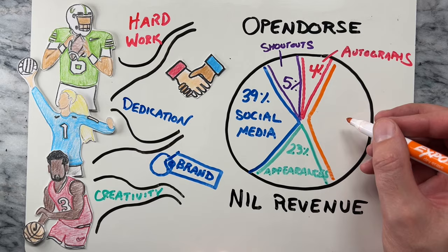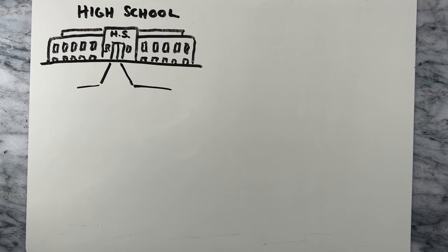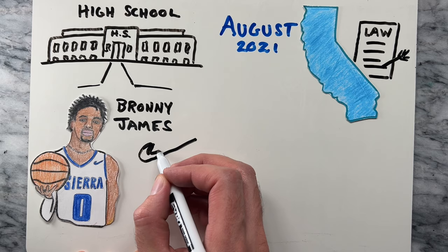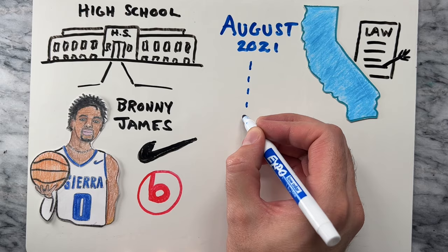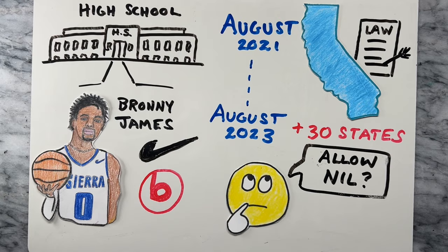NIL at the high school level is becoming increasingly prevalent. In August 2021, California became the first state to allow high school NIL. California high school athletes like Bronnie James signed lucrative deals with Nike, Beats, and more, and are continuing their NIL prospects into college. As of August 2023, more than 30 states allow NIL deals in high school, and many more state governments and high school athletic associations are exploring changing their bylaws to allow NIL.